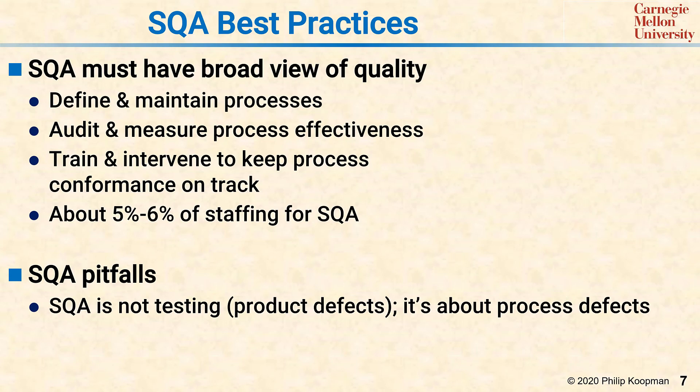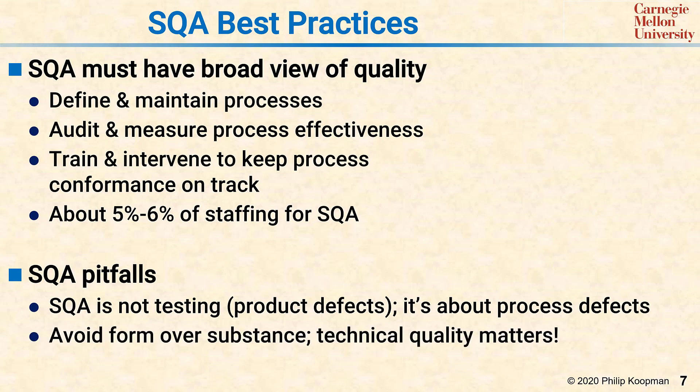SQA is not about finding bugs in the code — sure, that's a metric you monitor — but SQA is about finding bugs and defects in the process and the execution of the process. Stated another way, if you want good software, you better have a good process, and SQA is about making sure that you have a good process. Another SQA pitfall is getting into a box-checking mentality, where you look at form over substance.